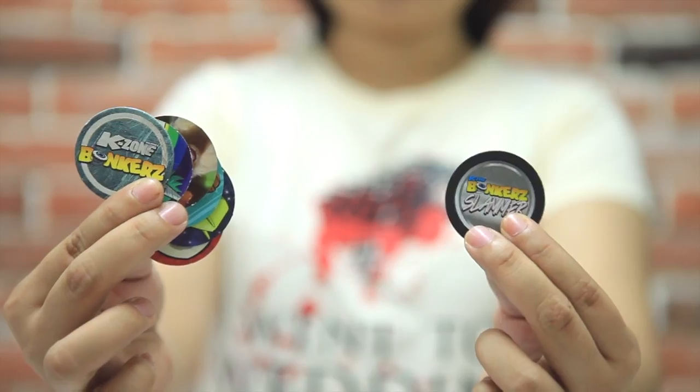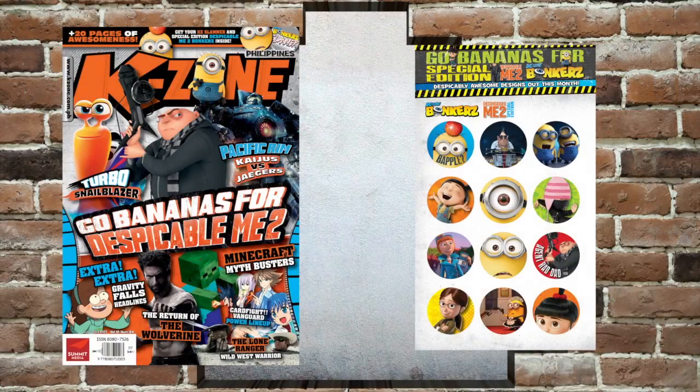First, you and your opponent each need KZ Bonkers and a slammer. Get them when you buy K-Zone's July issue. Gotta collect them!